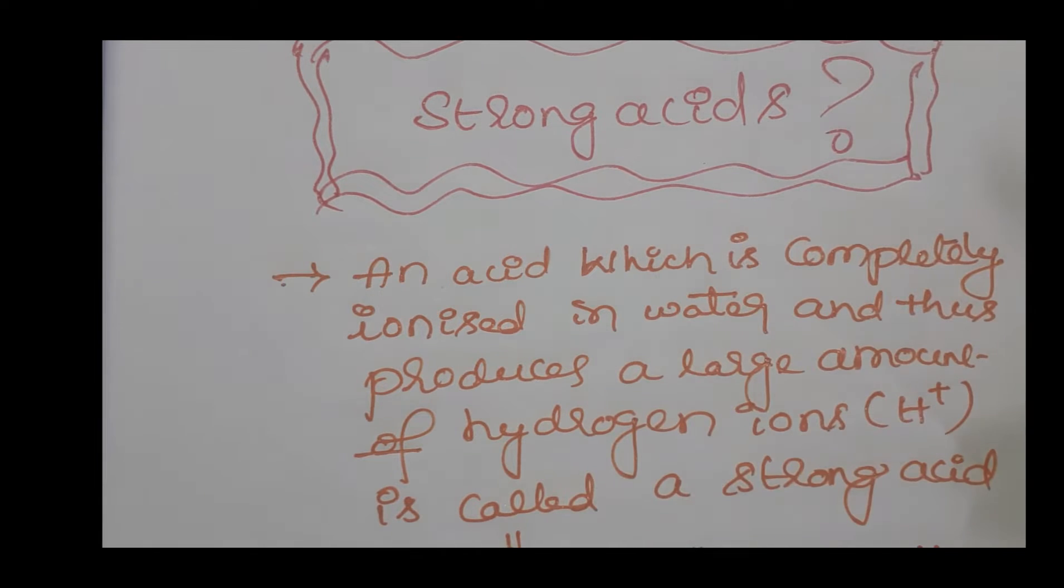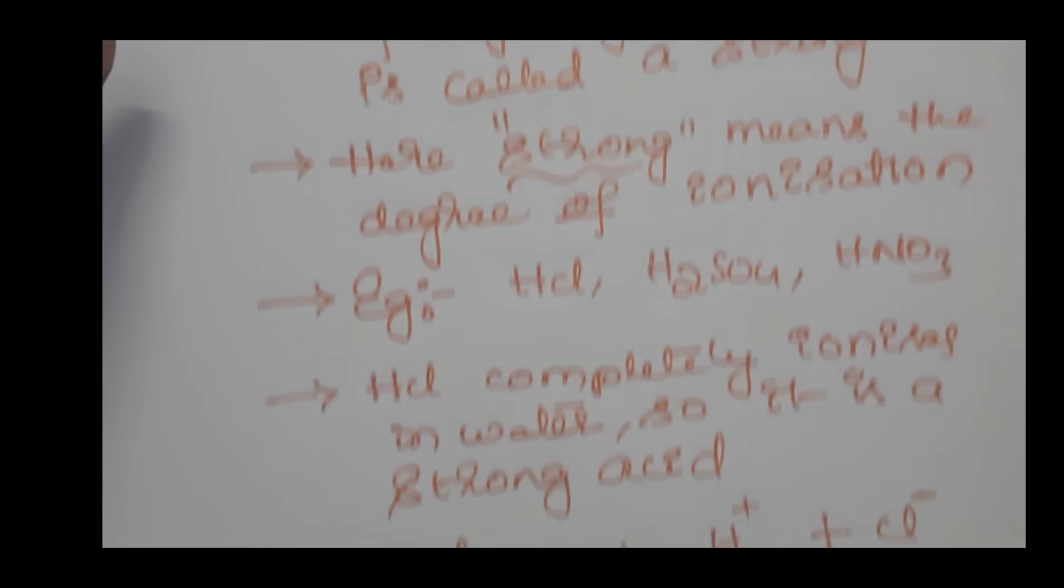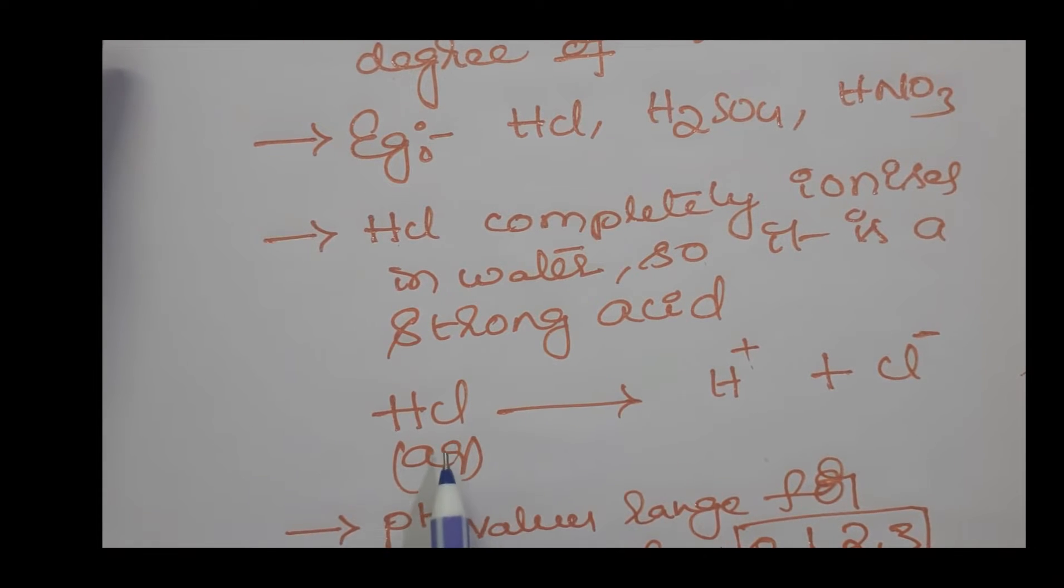Ionization is the process of splitting molecules into ions - positive and negative ions. For example, hydrochloric acid has HCl molecules. When HCl is dissolved in water, it splits into H+ ions and Cl- ions. This process of splitting molecules of a substance into ions is called ionization.